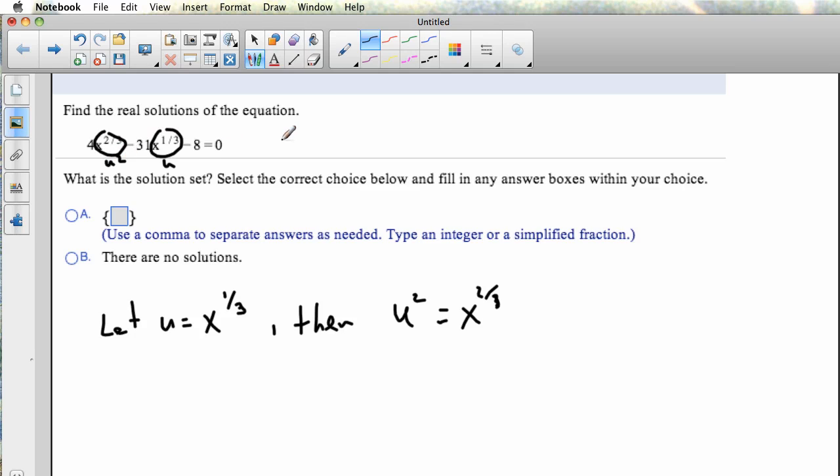So the equation becomes 4u squared minus 31u minus 8 equals 0.